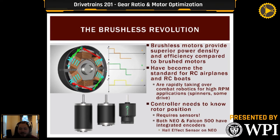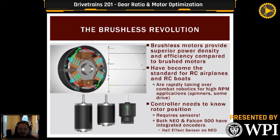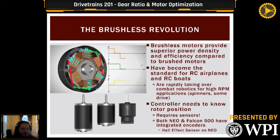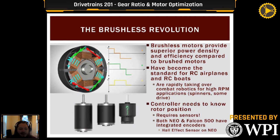Moving into the brushless revolution — it's completely changing the FRC landscape for drivetrains just like it changed other hobbies. Brushless motors have much better power density and in theory less mechanical wear, since there's no commutator and brushes making physical contact. In practice there can be teething issues and loading concerns. You can get a lot more power out of smaller packages: the Falcon with its speed controller is the size of a Mini CIM but provides far more power than any of them.